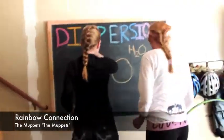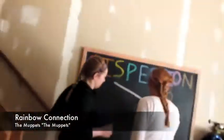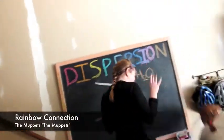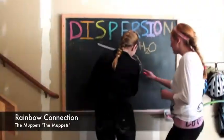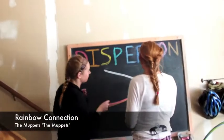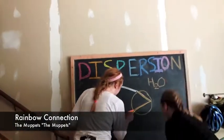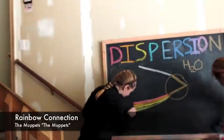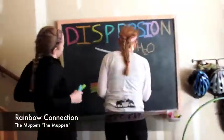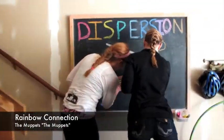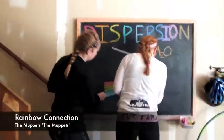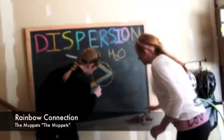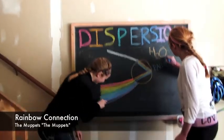Why are there so many songs about rainbows? And what's on the other side? Rainbows are visions, but only illusions, and rainbows have nothing to hide. Some we've been told and some choose to believe it — I know they're wrong, wait and see. Some day we'll find it, the rainbow connection, the lovers, the dreamers, and we.